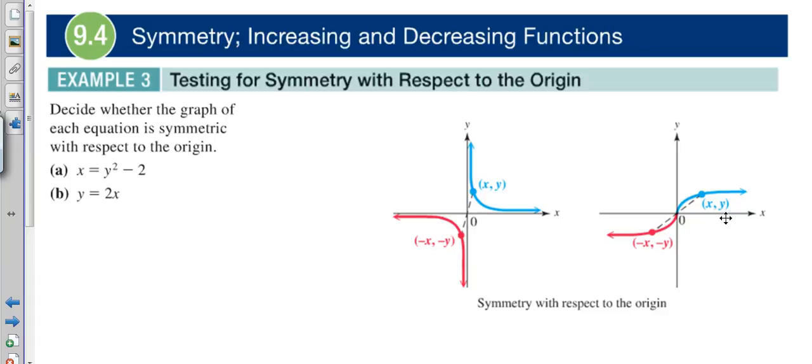We're not even going to bother to do part (a) algebraically because we know it's not symmetric, but you could. Basically, all you have to do is replace x and y with -x and -y, and you should get the exact same thing. So if I did that with the first one: -x = (-y)² - 2.